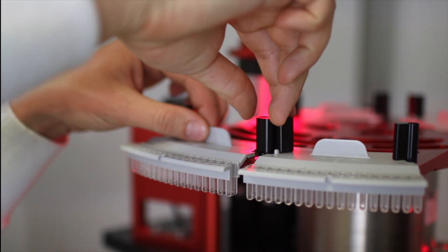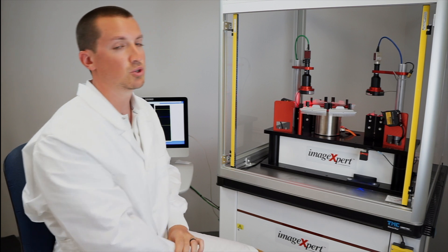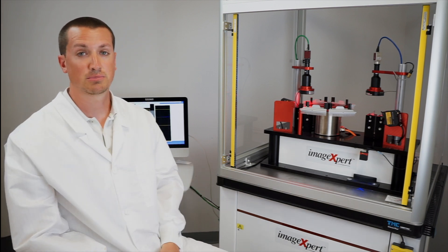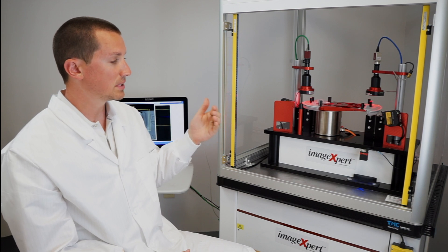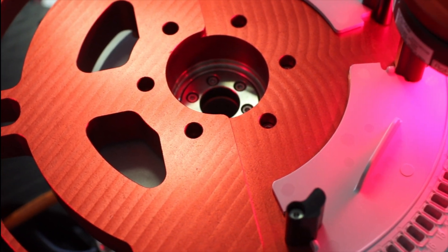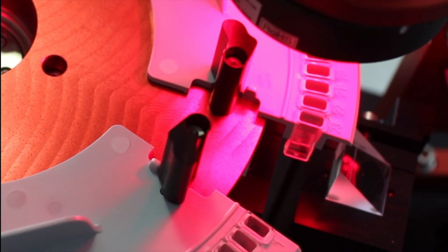The part is locked into position on the system and it's moved into the first inspection position. Here, a laser measures the positioning of the cuvette in one degree of freedom to help determine its overall orientation.